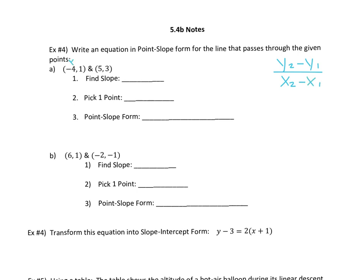You're going to label one point (x₁, y₁) and the other (x₂, y₂) and plug into the slope formula. For this example: (3 − 1) / (5 − (−4)) = 2 / (5 + 4) = 2/9. You can't reduce 2/9, so the slope is two-ninths.